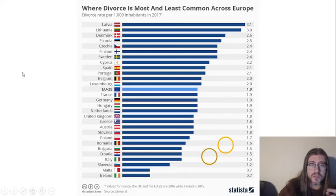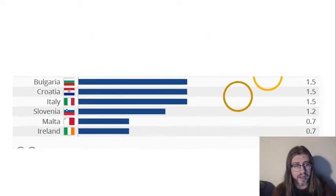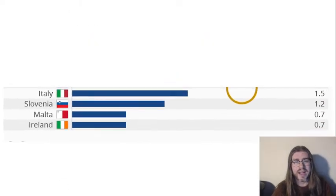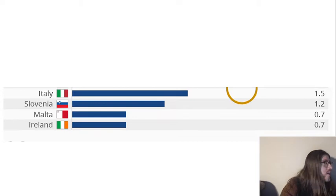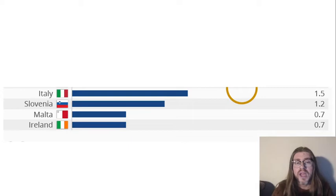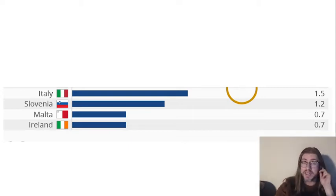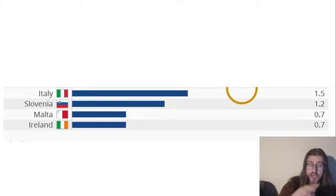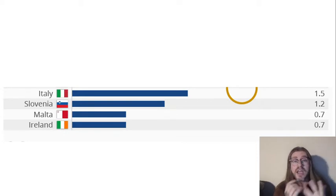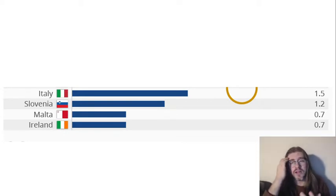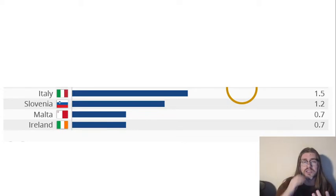Right down at the bottom, look at Ireland - why is Ireland's divorce rate so low? And Italy too - two really low divorce rates. The big reason: Catholic countries. They are Catholic majority countries and they're going to have much lower divorce rates.